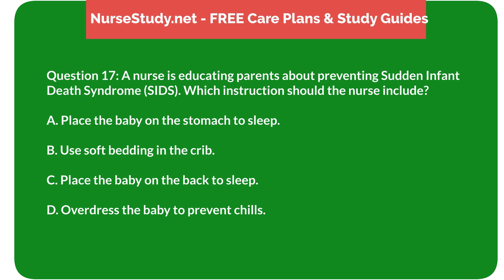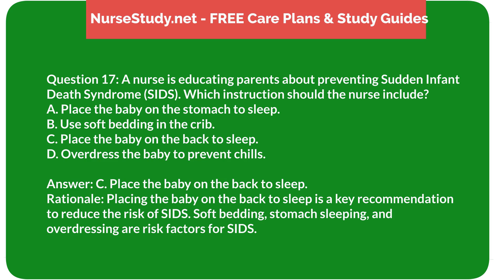Question 17: A nurse is educating parents about preventing sudden infant death syndrome (SIDS). Which instruction should the nurse include? A) place the baby on the stomach to sleep, B) use soft bedding in the crib, C) place the baby on the back to sleep, D) overdress the baby to prevent chills. Answer: C) place the baby on the back to sleep. Rationale: Placing the baby on the back to sleep is a key recommendation to reduce the risk of SIDS. Soft bedding, stomach sleeping, and overdressing are risk factors for SIDS.